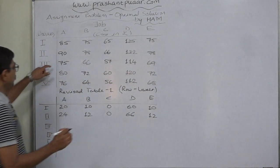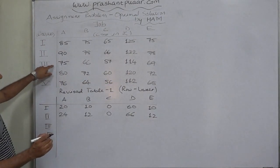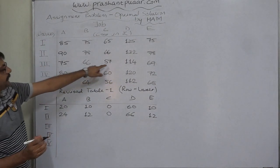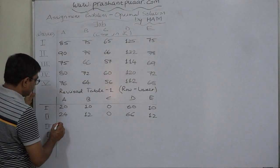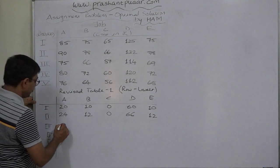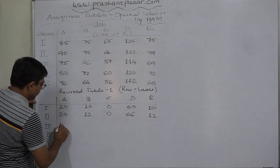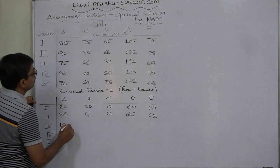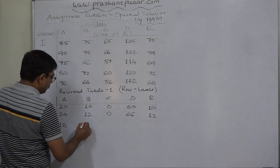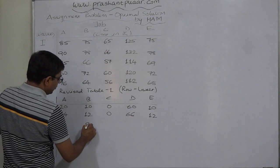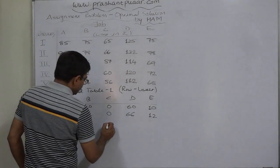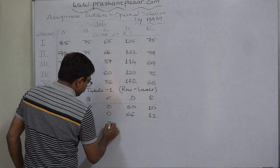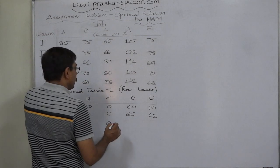In row 3, the lowest value is 57. So we subtract 57: 75 minus 57 is 18, 66 minus 57 is 9, and 57 minus 57 is 0.